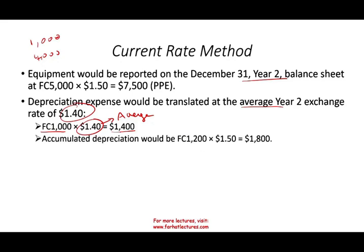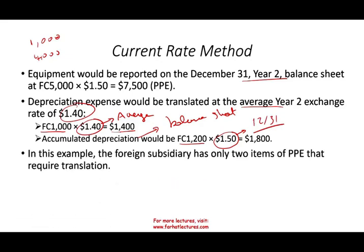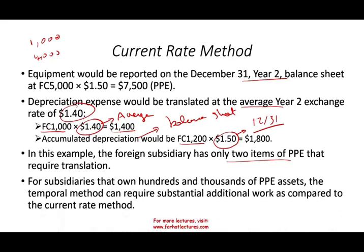For accumulated depreciation under the current rate method, we have 1,200 of accumulated depreciation translated at the year-end rate of 1.5 (December 31st), giving 1,800. Remember, accumulated depreciation is a balance sheet account — a contra asset — so we use the year-end rate. In this example the subsidiary had only two assets; imagine if you had 50 items. The temporal method creates substantial additional work to translate financial statements, though software can help track it.